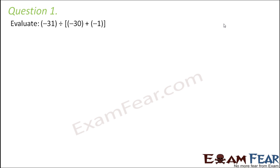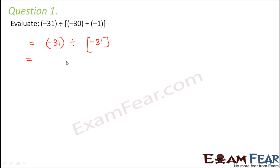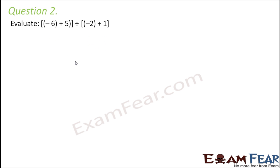Question number 1: Evaluate minus 31 divided by (minus 30 plus minus 1). Now we know that the distributive property doesn't hold true for division, so we will not apply any property and just simplify directly. Minus 30 plus minus 1 is minus 31, so minus 31 divided by minus 31 equals 1. So 1 is the answer.